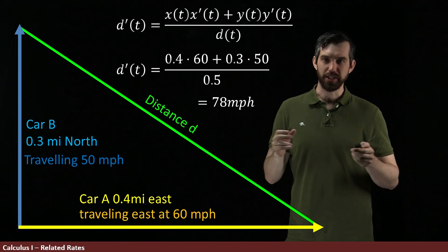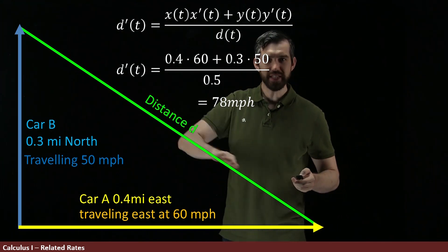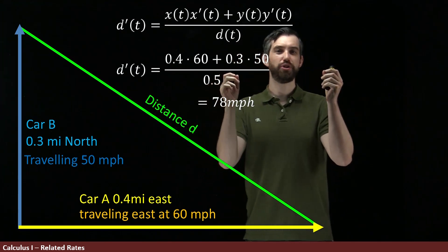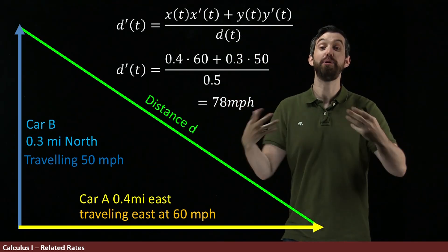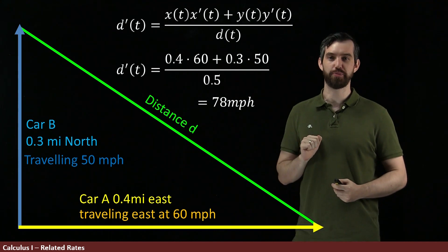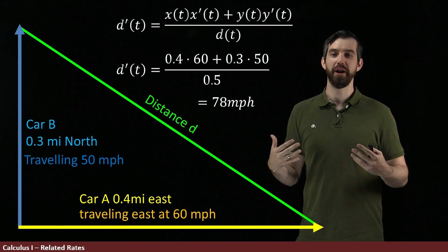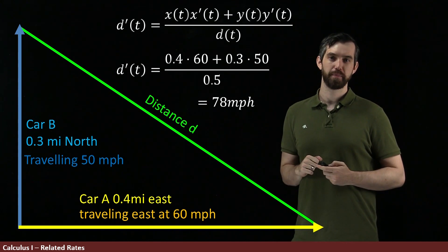So what we've accomplished is that I have figured out d prime of t, which is telling me that this distance, the distance between the two cars, the distance as a bird will fly, that that is changing at this rate of 78 miles per hour. This is a derivative, it is a rate, it is a miles per hour, and we have managed to be able to compute that.